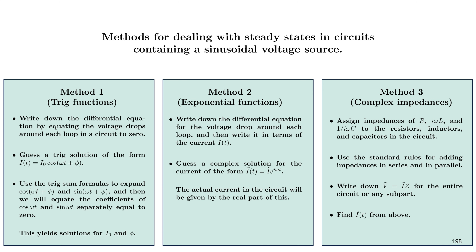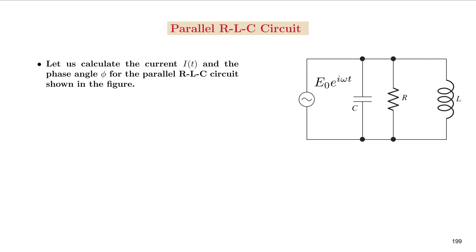In the wake of what we have learned in the previous session, we are in a position to understand how to find out the steady state solutions in circuits containing sinusoidal voltage sources using the method of complex impedances. The four steps that we may be taking to find the steady state solutions are outlined in the box. Let's see how.